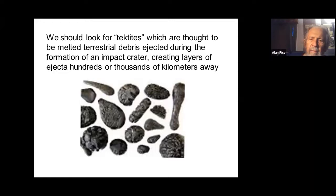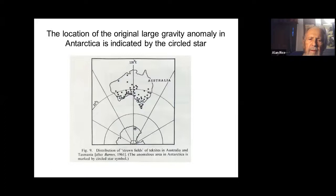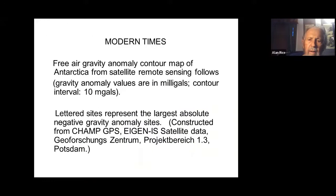Tektites are thought to be melted terrestrial debris—when the meteor hits, it creates such a high temperature that a lot of material melts, creating layers that we check thousands of kilometers away. The location of the original gravity anomaly of Antarctica is located by the circle star all the way at the bottom. There's a star indicating where Jack ran into his first anomaly, and it looks like a tektite strewn area.